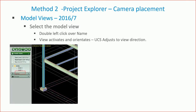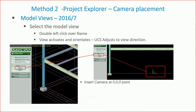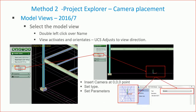To put the camera into a model view using the original method, you double-click over the name to activate the view — it turns on, rotates the view, and puts the UCS at the origin. With the UCS at the origin, you insert a camera using the zero-zero point and, because you're looking down the UCS, the camera is placed there. You can then set the type of camera and its parameters. You can also manually place a camera without linking it to a model view.